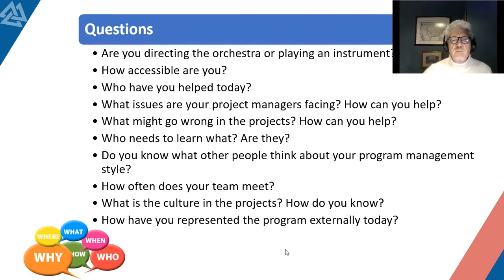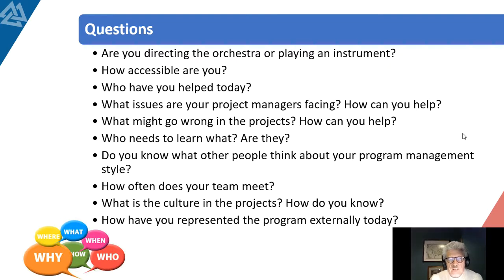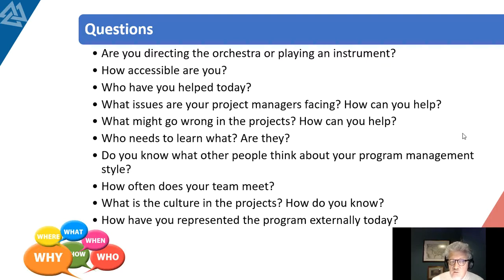So what to do about all of this? Here is a checklist I have developed — it's very subjective, you could add to it or subtract from it, but this is my take. First: are you directing the orchestra? Are you the conductor, or are you just playing a role? Because if you're just playing a role, you're not performing the role of the program manager. How accessible are you? Who have you helped today? Given what we've said about skills and capacity, this is a really important question. What issues are the project managers facing? What might go wrong — risk management — and how can you help? Who needs to learn what, and are they learning it? It's not just about you — it's the projects, the implementing partners. If there is a skills gap, this will come back to bite you.